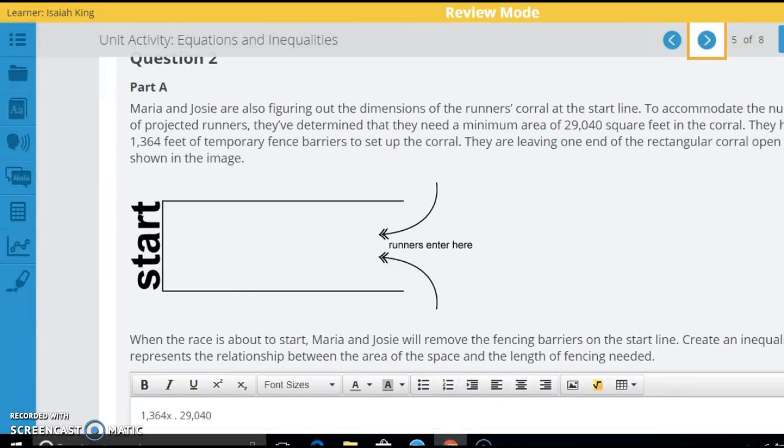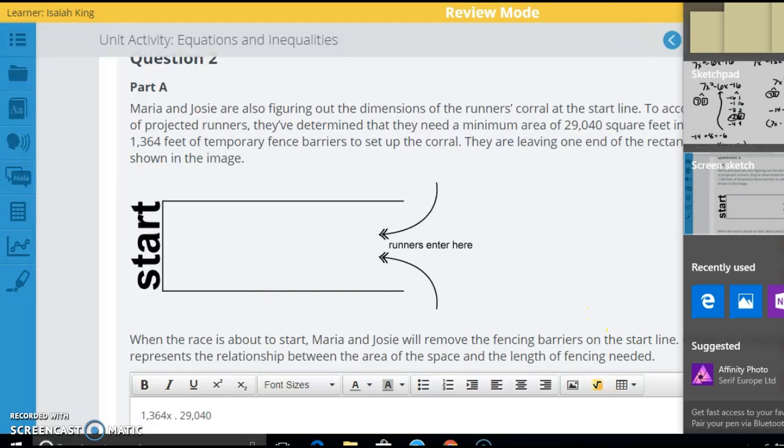Let's go ahead and look here now. So this is a little bit tougher. We want to, they give us an area, they give us a length of fencing. So it says that the minimum area is going to be 29,040 square feet. They have 1,364 feet of temporary fence. And they're leaving one end open. What it says here, create an inequality that represents the relationship between the area and the length.